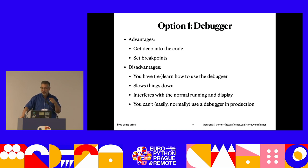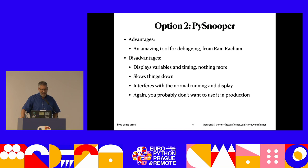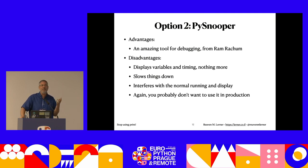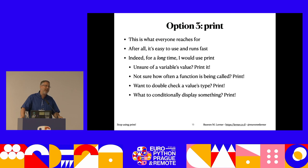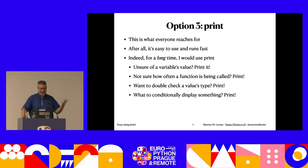Here's another option I learned about at EuroPython from the author - something called PySnooper. It's a decorator you stick on top of your function and it prints out timing, variables, and a lot of things you'd want to understand what's going on. But again, it interferes with actual running of your code and you probably don't want it in production. So we get to option three - probably the most popular option among Python developers including me - which is print. I'll just throw print at the problem.